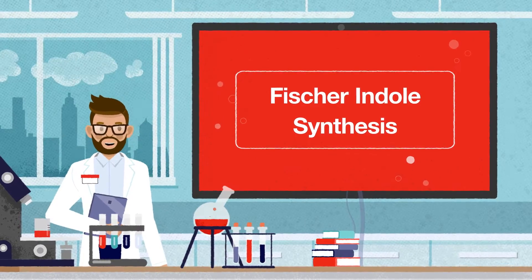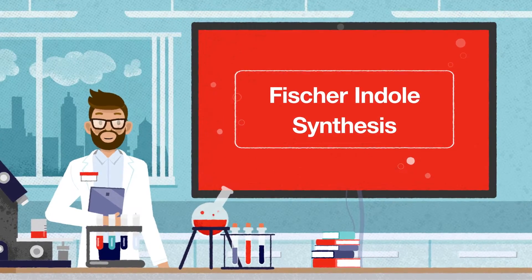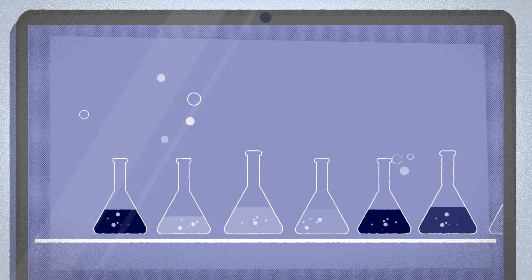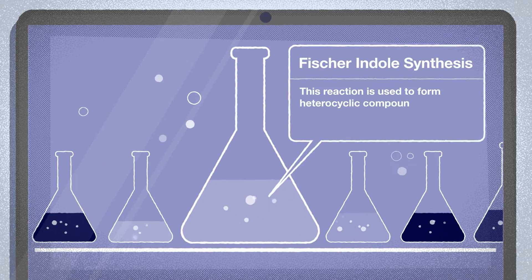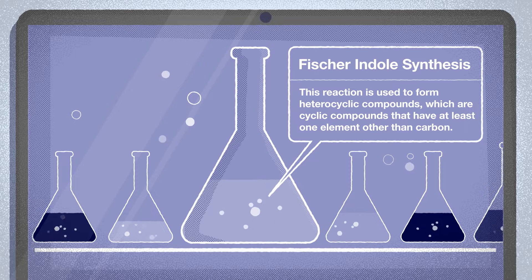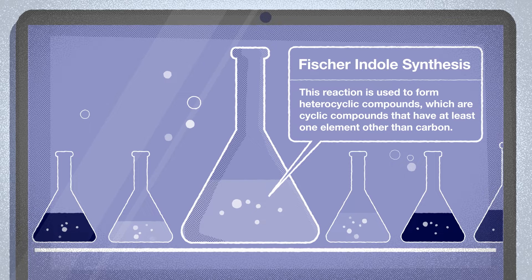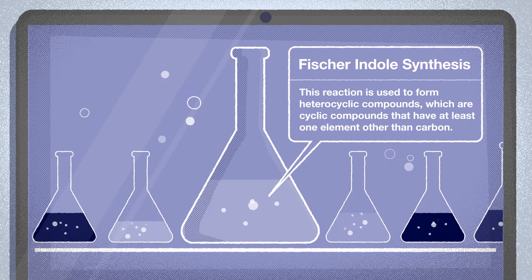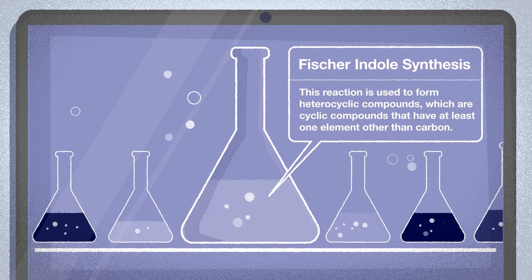First, a few facts. This reaction is used to form heterocyclic compounds, which are cyclic compounds that have at least one element other than carbon — things like nitrogen, oxygen, or sulfur — as part of their ring structure. The presence of heteroatoms gives distinct physical and chemical properties to resulting molecules.